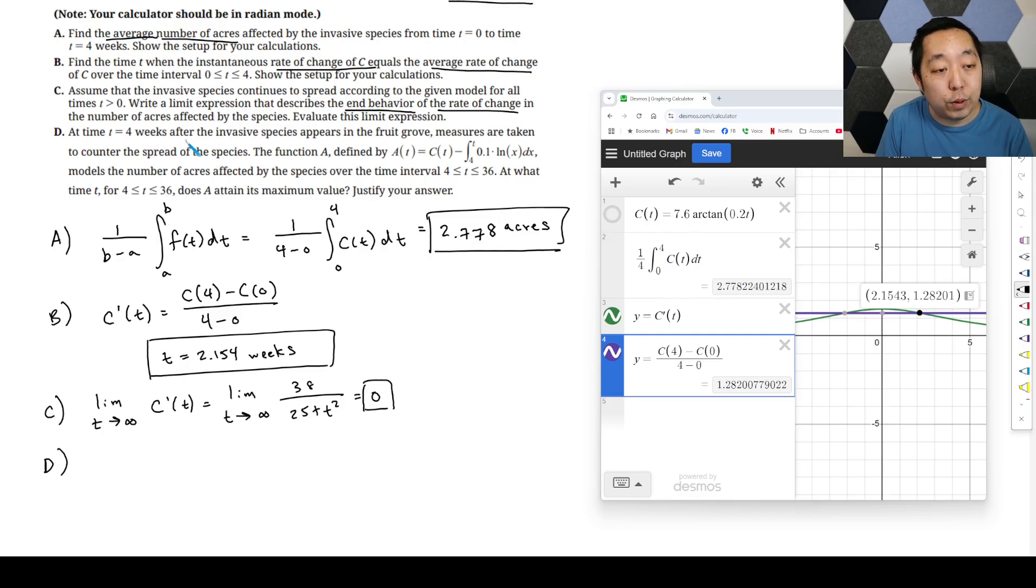Part D: at time T equals four weeks after the invasive species appear in the fruit grove, measures are taken to counter the spread of the species. The function A defined by this models the number of acres affected by the species over the interval. At what time does A obtain its maximum value? This is an absolute max, right? So the absolute max is a candidate's test. We want to first find where the derivative is 0 or undefined. So let's look at A prime of T. You could put this into the function and just have the calculator do it. I'll show you both ways.